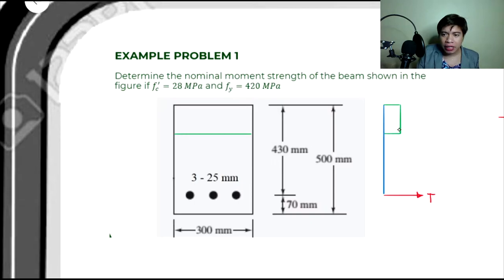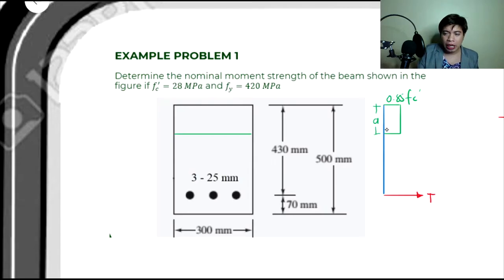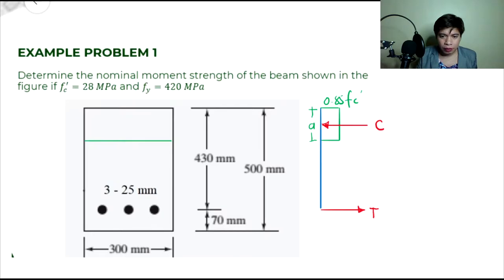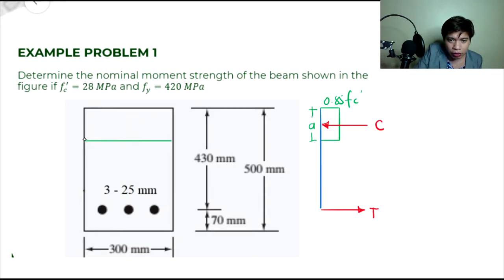Yung ating i-consider lamang dito is yung stress na 0.85 F sub C prime, which will act sa may compression area at a depth A mula sa ating extreme compression fiber. Yung ating compression force will act sa centroid ng ating compression area — yung may area na nilagyan ng green — so yung centroid ay nandito sa gitna. So yung compression force will act at A over 2.